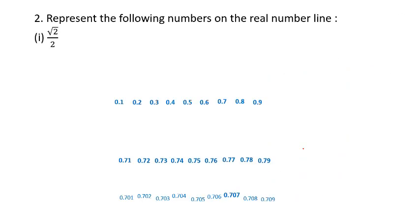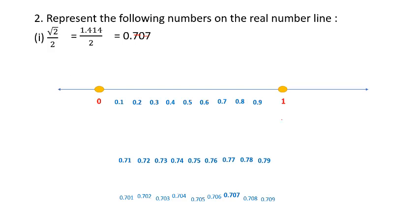Now let us represent root 2 divided by 2 on the real number line. Root 2 is 1.414, so 1.414 divided by 2 is 0.707. We draw a number line between 0 and 1 because 0.707 lies between 0 and 1.